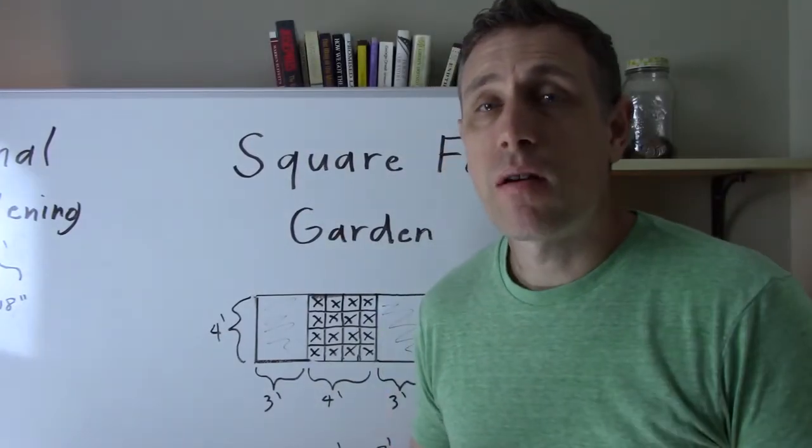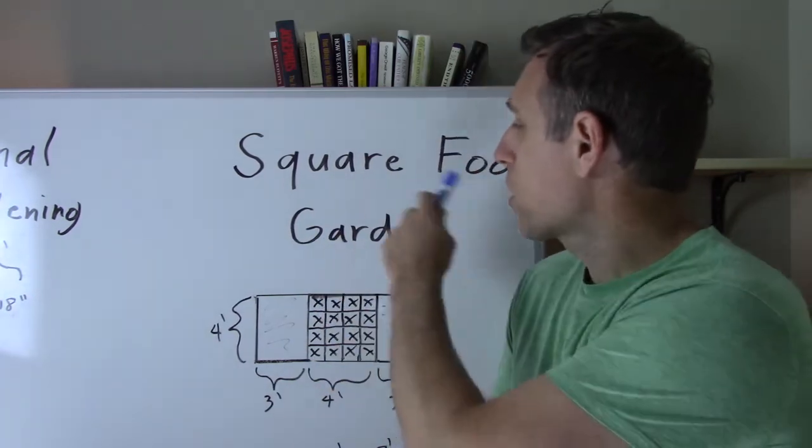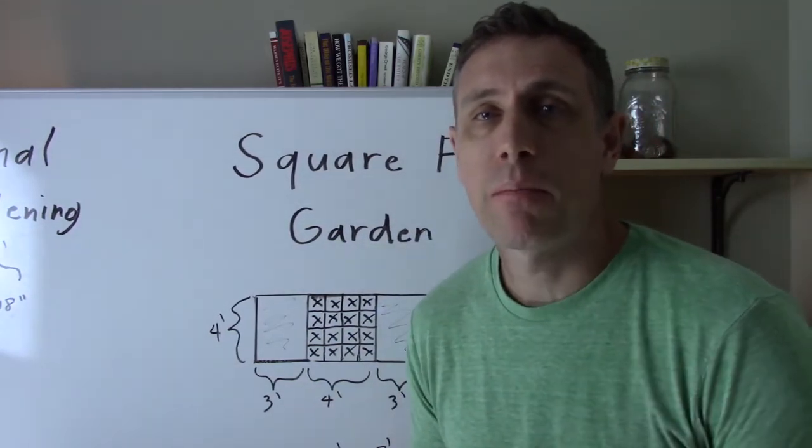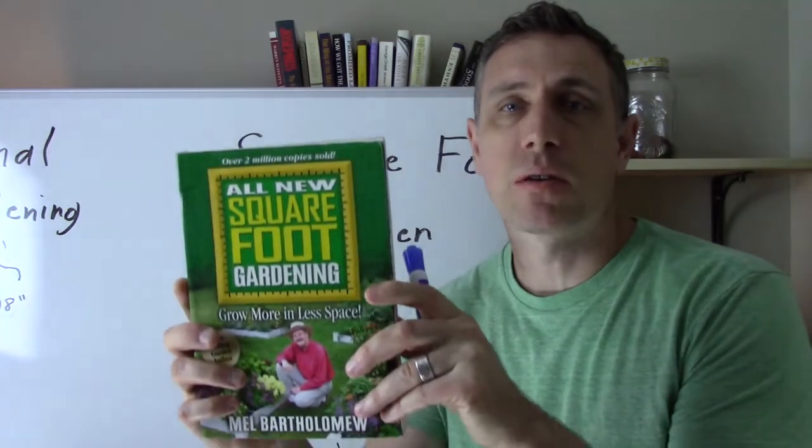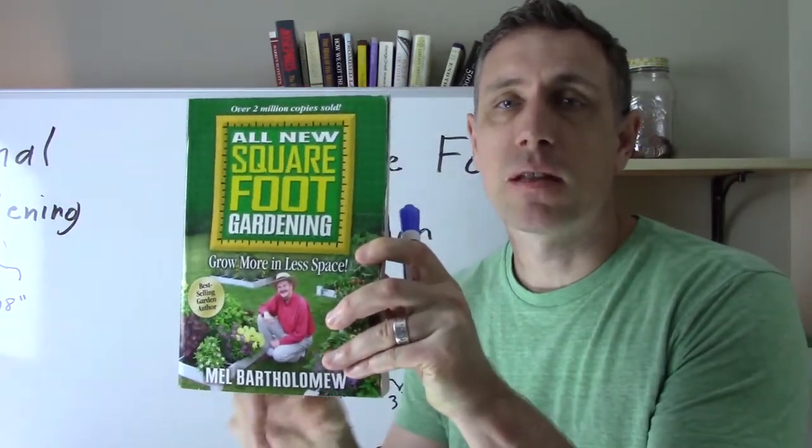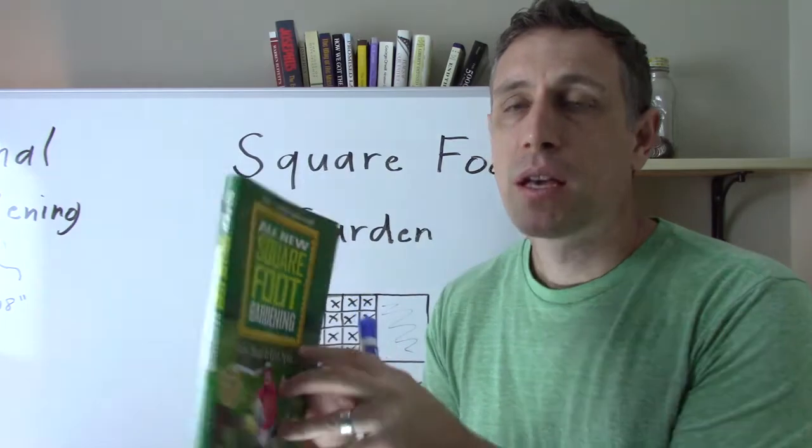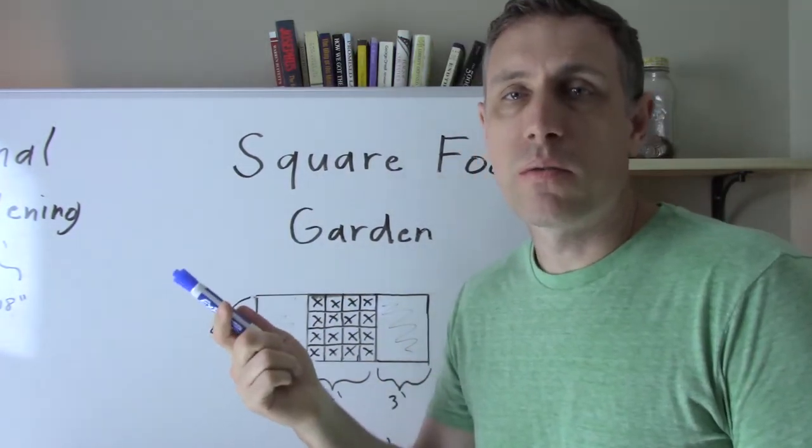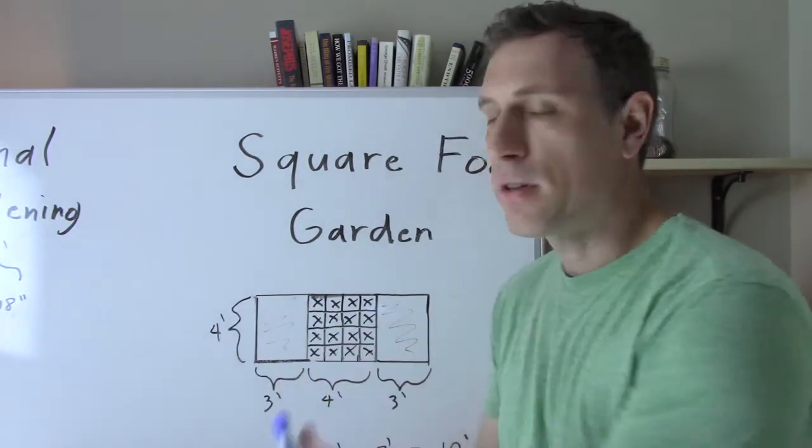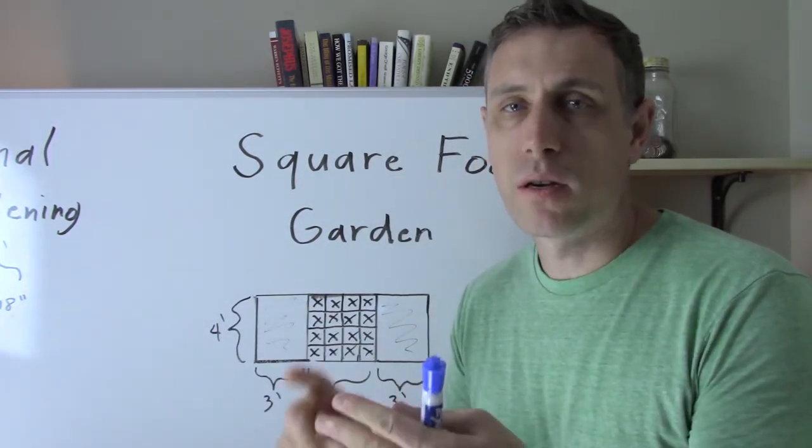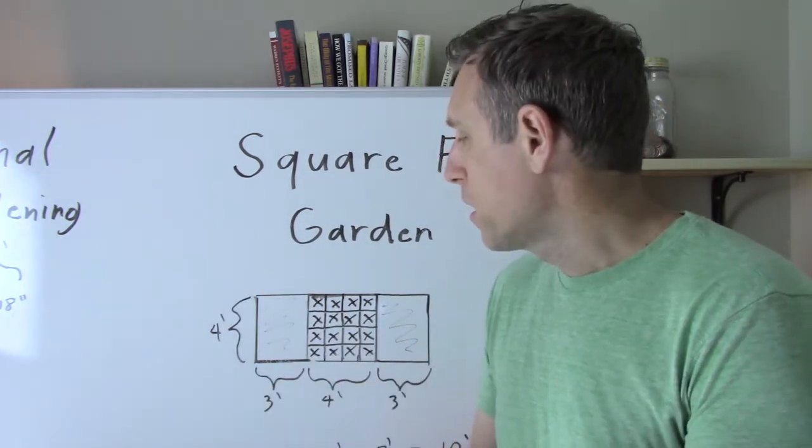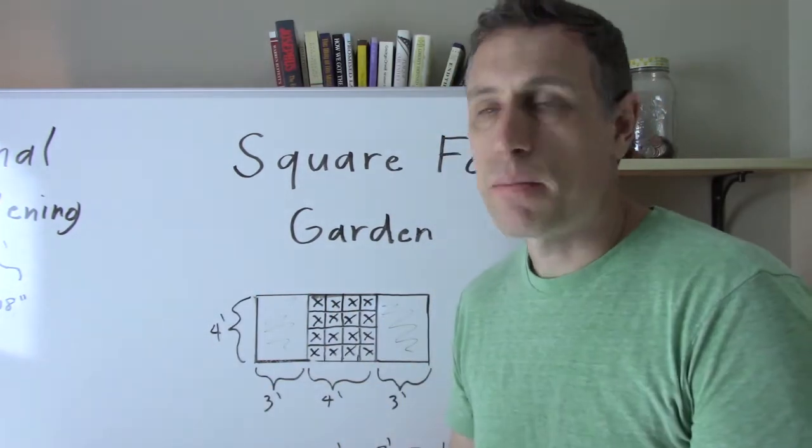So the next type of gardening method we're going to look at is called square foot gardening. It was actually popularized back in the 1970s by a guy named Mel Bartholomew. And I have his book, I have a link for it in the description below if you want to check it out. So in his method, instead of using the existing soil, he would build a raised bed. You can either build a raised bed out of wood, concrete, plastic, whatever kind of material you want to use. And I'll be discussing that in the next episode.